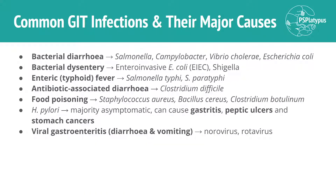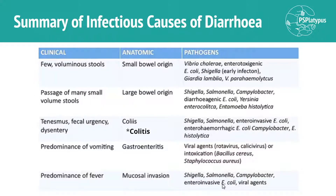We've got a bunch of pathogens to talk through. This summary table breaks down the clinical presentation of stools, vomiting or fever, tenesmus — which is straining to have a bowel movement and feeling like you haven't fully cleared your bowels — the typical anatomic location where those problems occur, and the main pathogens that cause those clinical presentations.